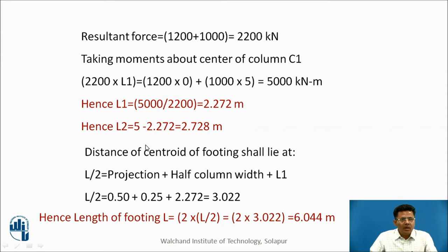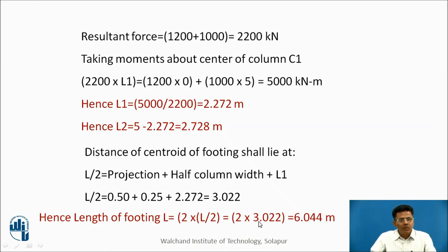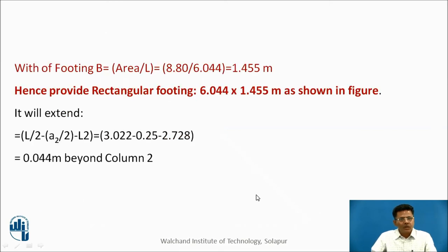The centroid of the footing shall lie at L/2 from the end. The half-length is calculated as: maximum projection beyond column face (0.5 m) plus half the column width (0.25 m) plus L1 (2.272 m) = 3.022 m. So the full length of the footing is 2 × 3.022 = 6.044 m. Width = area ÷ length = 8.80 ÷ 6.044 = 1.455 m.